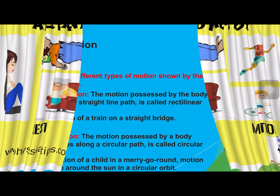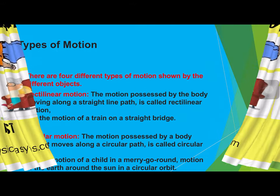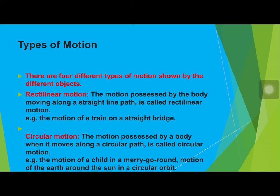Now let's talk about types of motion. There are four different types. First is rectilinear motion — the motion possessed by a body moving along a straight line path. That means if anything is going straight without any turn, it is rectilinear motion, like the motion of a train on a straight track.